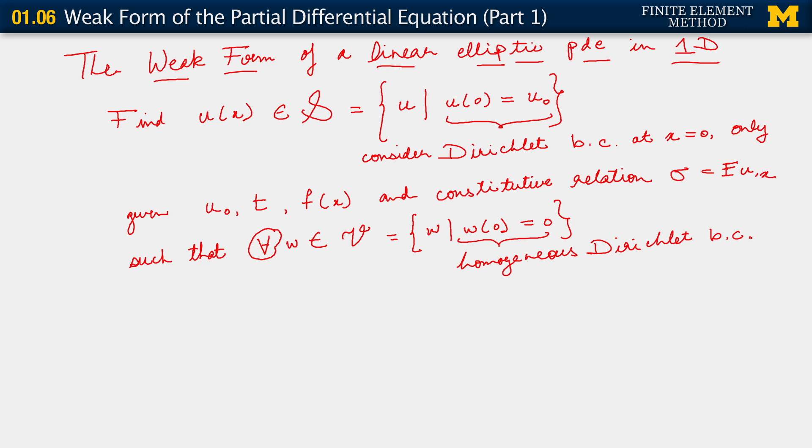Let me read what we have so far, we're not yet done. Find u belonging to S, where S is that, given u₀, t, f(x), and the constitutive relation σ = Eu,ₓ, such that for all w belonging to V, where V is as specified, the following holds now.